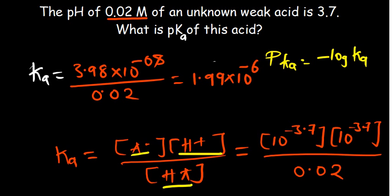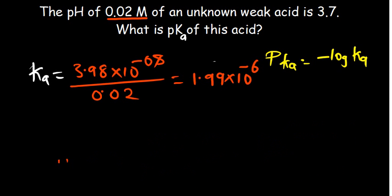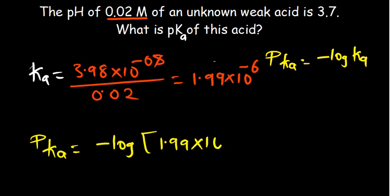So we have a value of Ka. We should be able to find the pKa. So our pKa, therefore, is going to be the negative log of the value that we have. So negative log of 1.99 times 10 to the power negative 6. So log of that. So the value that I'm getting for a pKa is basically equal to 5.7.